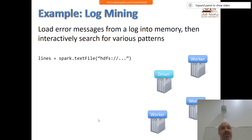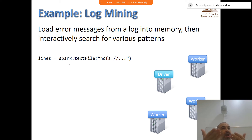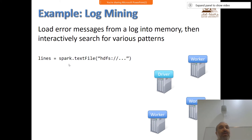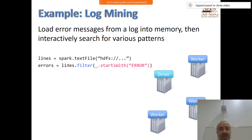You load your dataset - one big file - using a single line. You say SC dot text file, where SC is the Spark context, which is already available when you get into the Spark shell. Text file means: load this file into memory. Once you write this in the shell, what will happen? Nothing - because this is a transformation and we didn't do any action yet. Spark will indicate that there is a transformation that can be done, but it will not do it. Nothing will be loaded. That's the base RDD, but not uploaded yet.